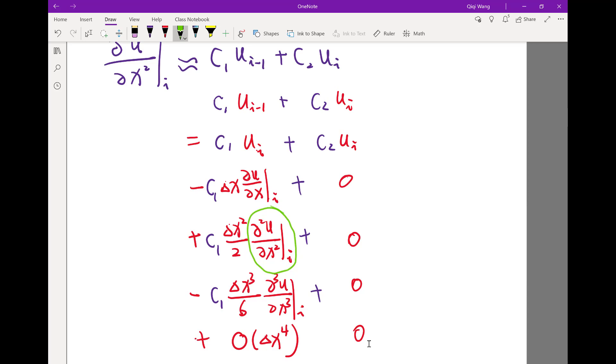So how do I add another thing to play with? I add another UI term. I use UI minus one, I use UI. How about adding another term that is UI plus one? Let's see: plus C3 times UI plus one. Now I'm going to do the same Taylor series expansion.